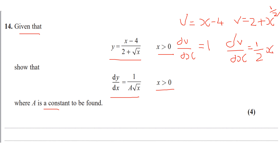Now, using our quotient rule, which is given to us in our formula booklets for all examples: d/dx of u over v, so quotient meaning a fraction, is v du/dx — so that times that — subtract u dv/dx. Order matters here, all over v squared.